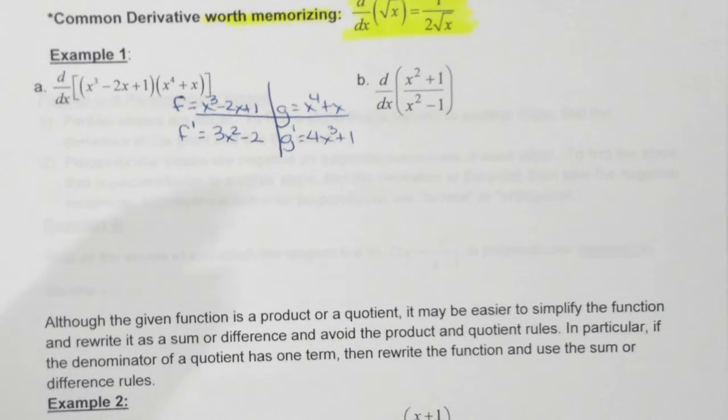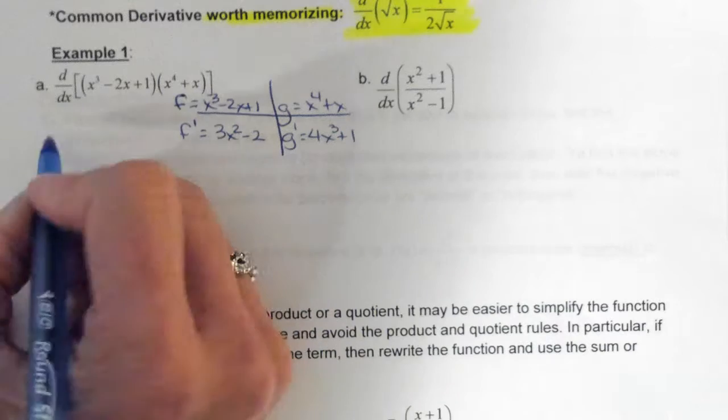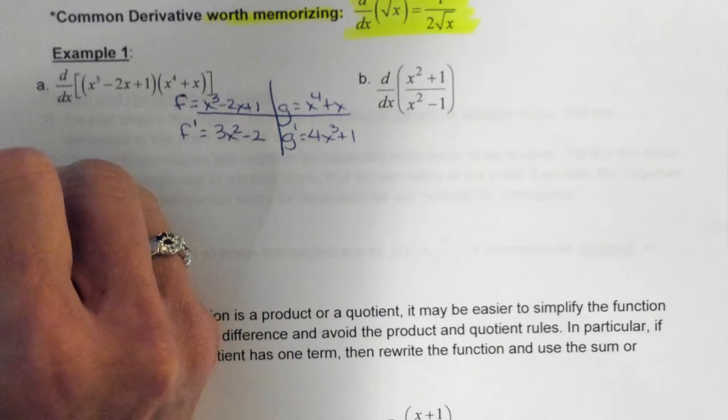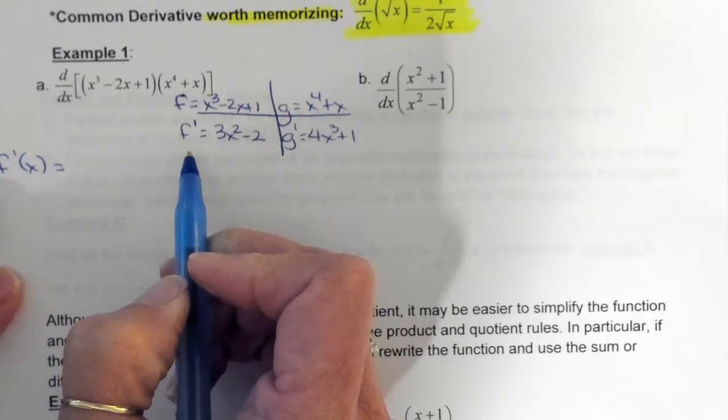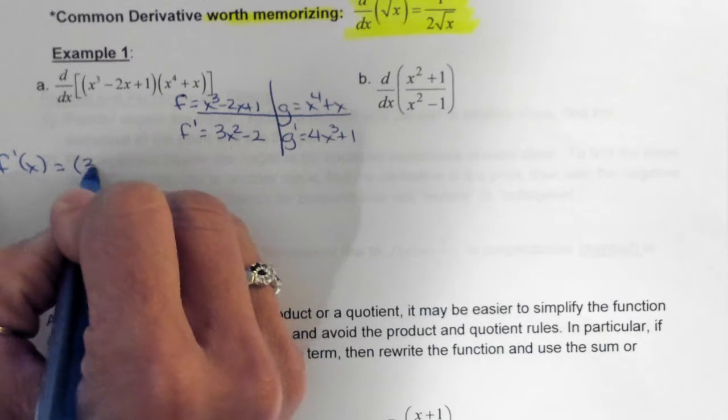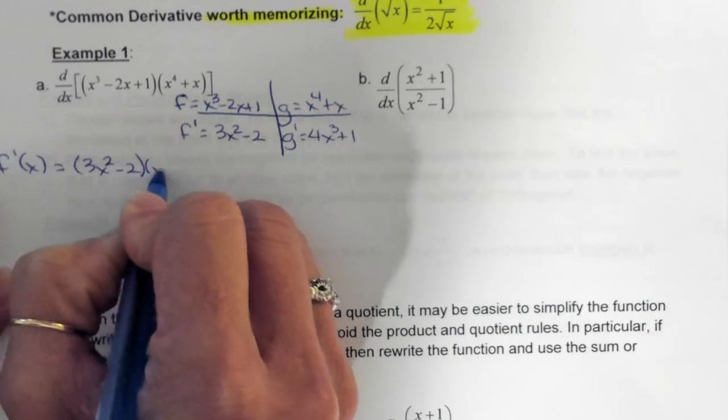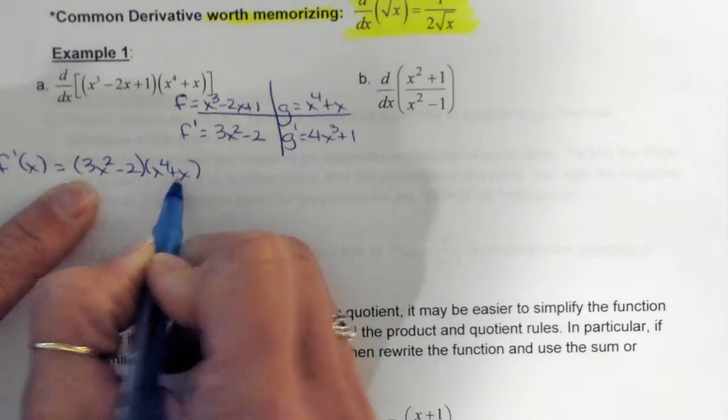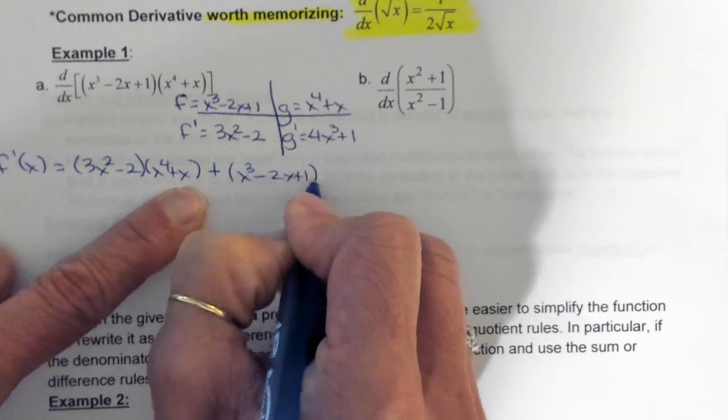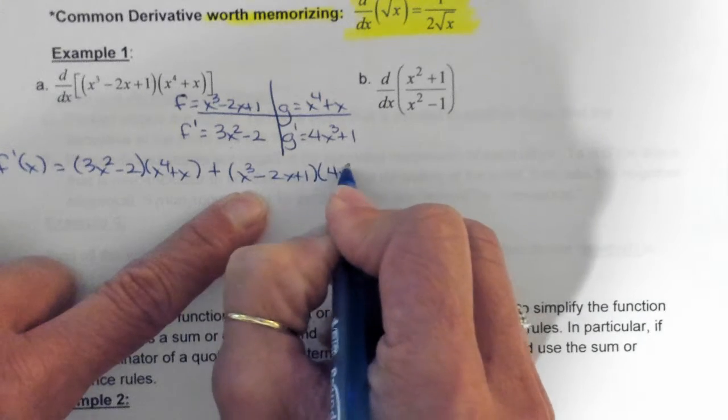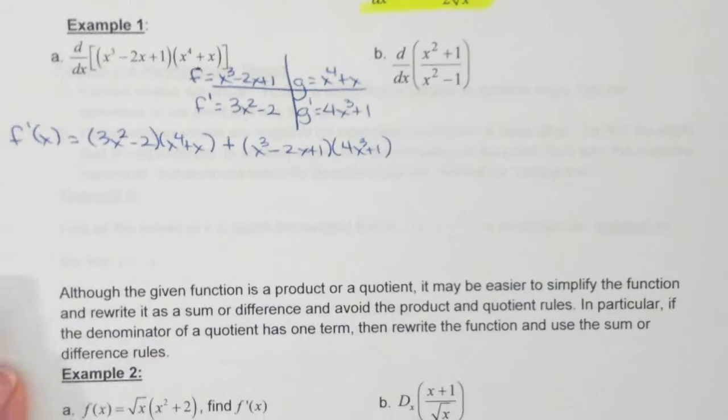Okay, so based on the derivative of fig figgy, F prime G plus FG prime, we have everything that we need here. So we would say that the derivative, let's just call this F prime of X, meaning this whole thing right here, is equal to F prime times G, so this would be 3X squared minus 2 times X to the fourth plus X, so that's F prime G, plus FG prime, which in this case would be X cubed minus 2X plus 1 times 4X cubed plus 1. This right here is your derivative. That's a lot, right?